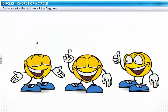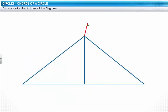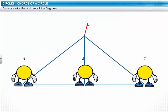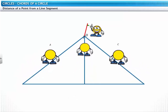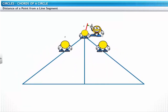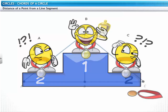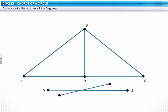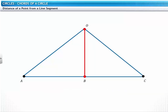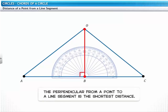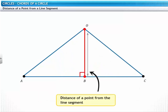One day three friends A, B and C decided to have a race. They made a starting line ABC and decided to run to their common friend O. B won the race because B had the advantage of running the shortest distance. B ran along the perpendicular line from O to AB. The perpendicular from a point to a line segment is the shortest distance between them, and it is also defined as the distance of the point from the line segment.